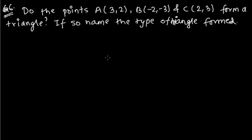Hi friends, here is another problem in coordinate geometry related to the distance formula. The question is: do the points A(3,2), B(-2,-3), and C(2,3) form a triangle? If so, name the type of triangle formed.